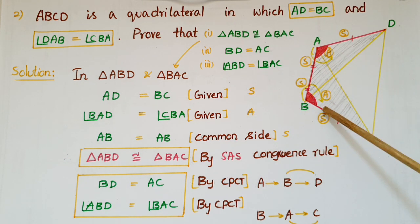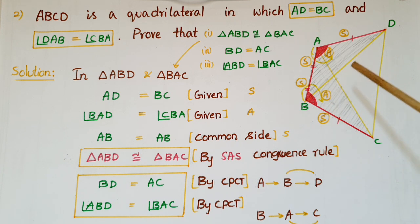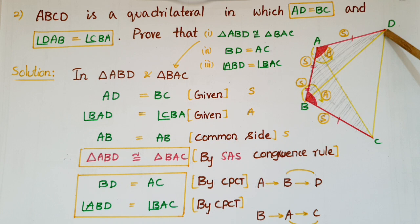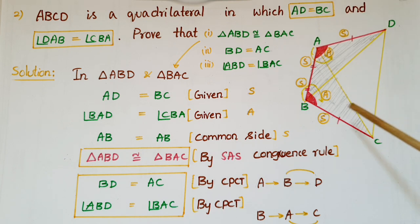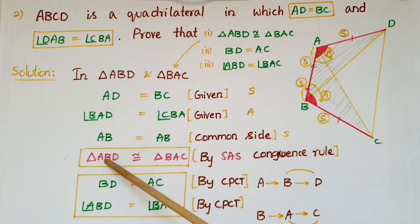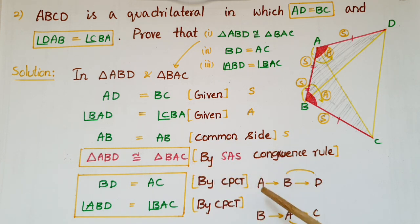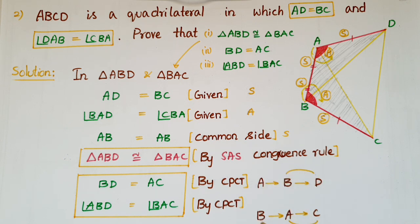Once these two triangles are congruent, we can say that all other parts of these two triangles are equal. So BD is equal to AC by CPCT, and angle ABD is equal to angle BAC. Writing these two triangle names in order — ABD and BAC — we can easily write BD is equal to AC and angle ABD is equal to angle BAC.